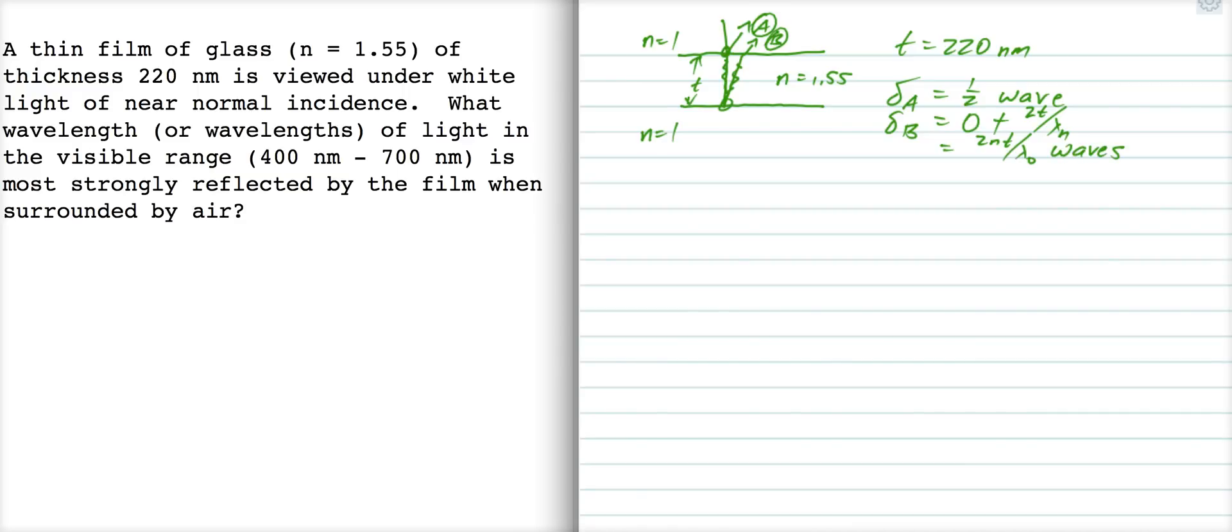Now, we want light to be strongly reflected. So, strongly reflected. That's the condition of constructive interference. So, we're going to set the difference in phase shifts here equal to 0, well, 1 wave, 2 waves, 3 waves, and so on. Right. So, we'll start with setting it equal to 0 and see where that gets us.